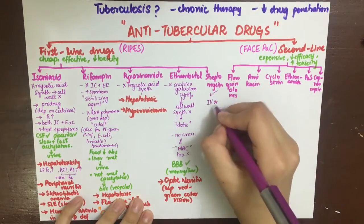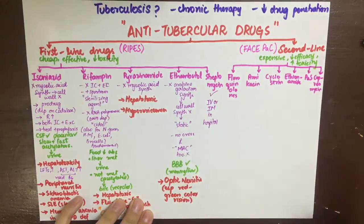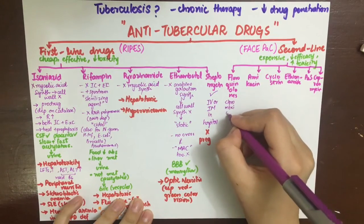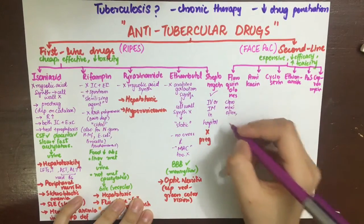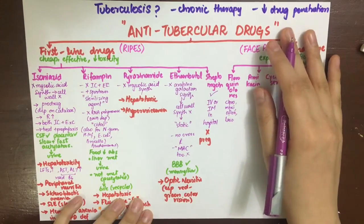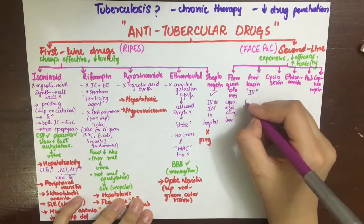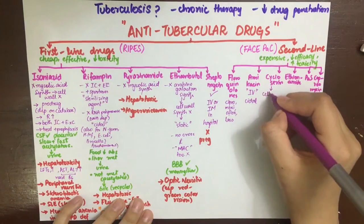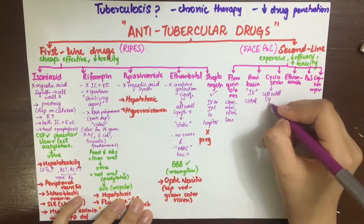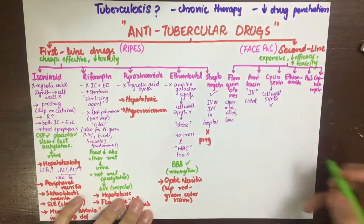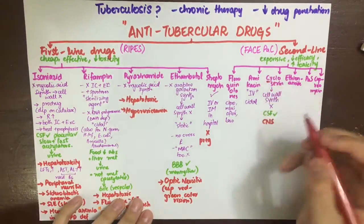Ethambutol can also cause hyperuricemia, similar to pyrazinamide. Streptomycin is an aminoglycoside studied previously; for TB patients it is given IV or IM in hospitals. Fluoroquinolones that can be used include ciprofloxacin, ofloxacin, moxifloxacin, and levofloxacin — all bactericidal. Amikacin is also used against Mycobacterium tuberculosis, given IV, and is a bactericidal drug. Cycloserine is a cell wall synthesis inhibitor that can cross the blood-CSF barrier and has CNS side effects such as tremor, psychosis, convulsions, and headache.